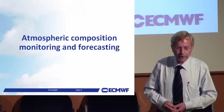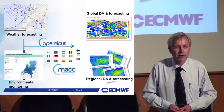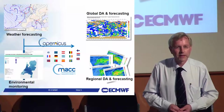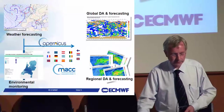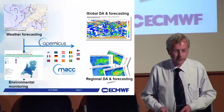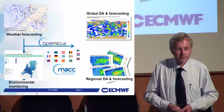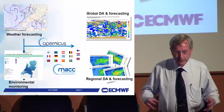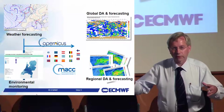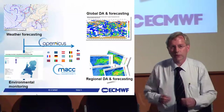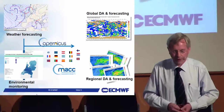At ECMWF we have been running a project called MAC, which combines weather forecasting with forecasting of atmospheric constituents — from environmental monitoring like pollution, but also constituents in the higher atmosphere. This is merged on a global scale with the atmospheric prediction model, and from those global forecasts we also feed regional models, in exactly the same way as weather prediction, to provide more detailed forecasts of regional atmospheric composition.